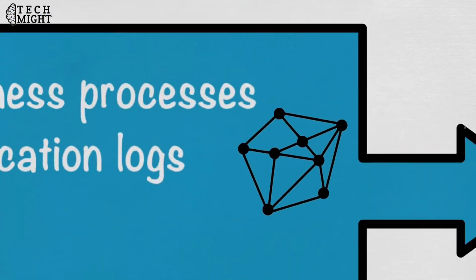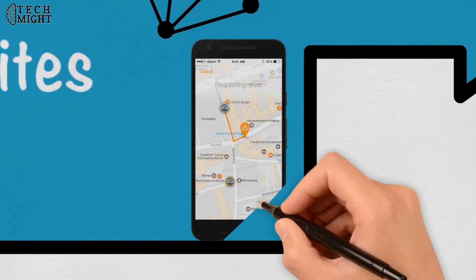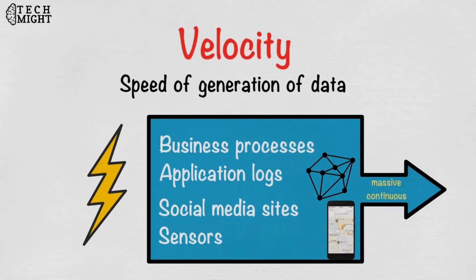Big data velocity deals with the speed at which data flows in from sources like business processes, application logs, networks, and social media sites, sensors, mobile devices, etc. The flow of data is massive and continuous.